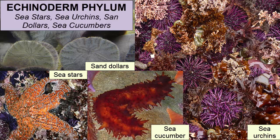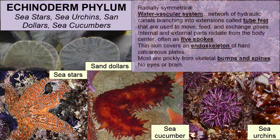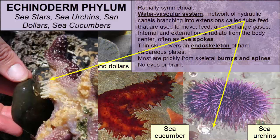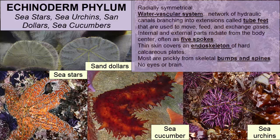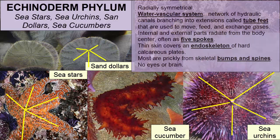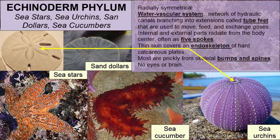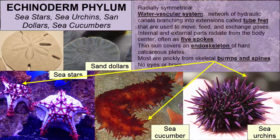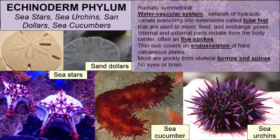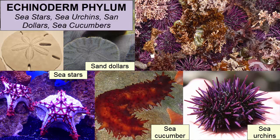The Echinodermata phylum consists of spiny-skinned, benthic, radially symmetrical animals. Most have a water vascular system — a network of hydraulic canals branching into tube feet used to move, feed, and exchange gases. Internal and external parts radiate from the body center, often as five spokes. A thin skin covers an endoskeleton of hard calcareous plates. Most echinoderms are prickly from skeletal bumps and spines; they lack eyes or a brain. There are 6,000 species, including sea stars, brittle stars, basket stars, sea urchins, sand dollars, sea biscuits, and sea cucumbers.